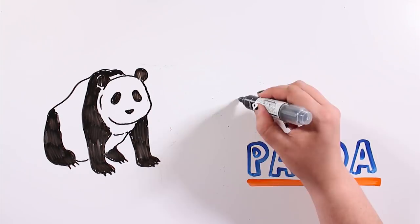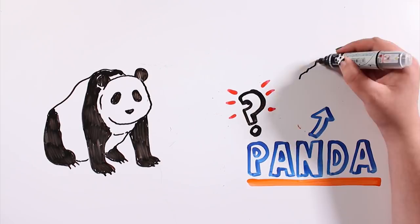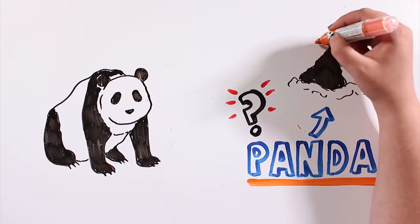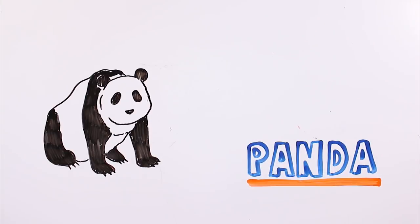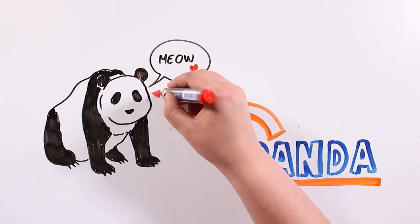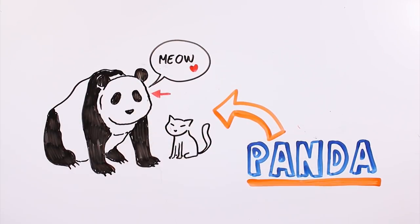The origin of the word panda is uncertain, even though it is believed that it comes from a Himalayan language. Their name in Chinese means bear cat. This is because pandas have vertical pupils which remind us of cats' eyes.